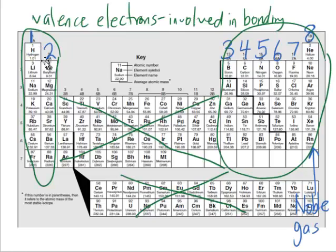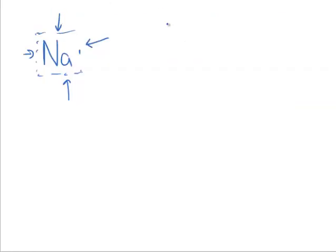So now we'll do one from the second group. We'll pick magnesium. In magnesium, it has two valence electrons. Now, the only thing you can't do is pair them up. But other than that, you can put them anywhere. So I could put two there, I could put one here and one here, I could put them on opposite sides. It doesn't matter.